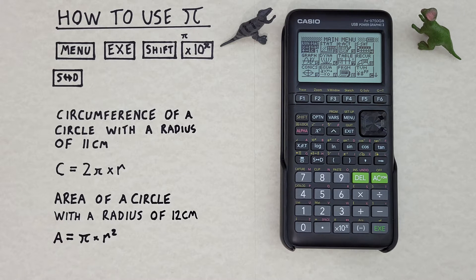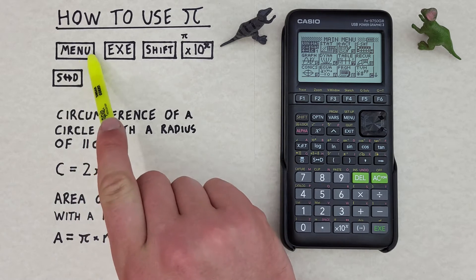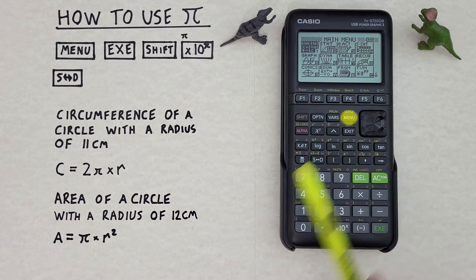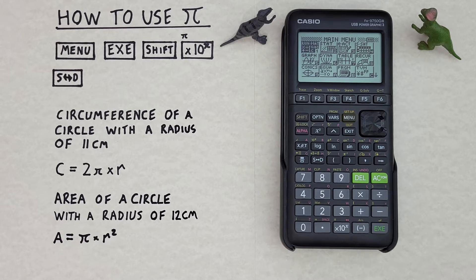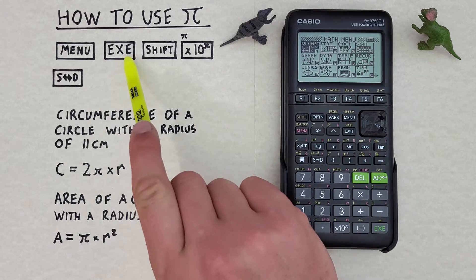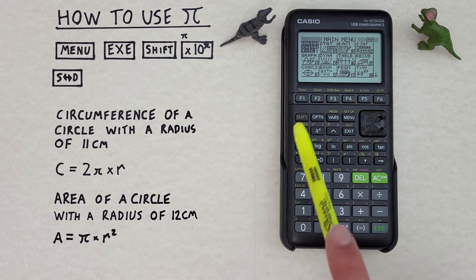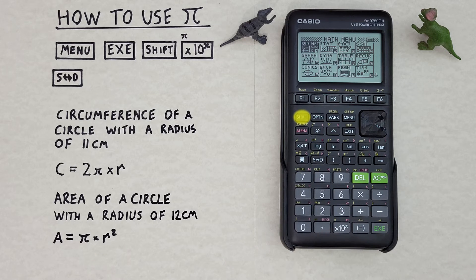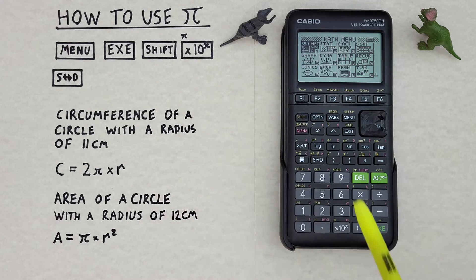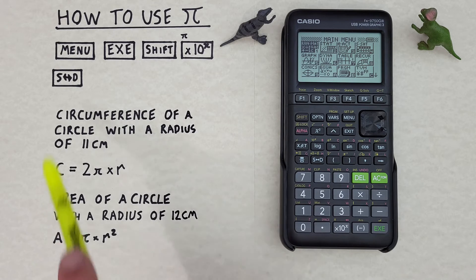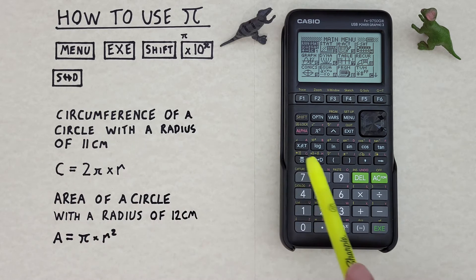To do this we'll use the menu key that looks like this located here, the exe or execute key that looks like this located here, the shift key that looks like this located here, the times 10 to the x with the shift function of Pi that looks like this located down here, and the S to D or conversion key that looks like this located here.